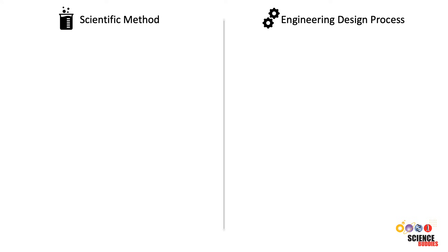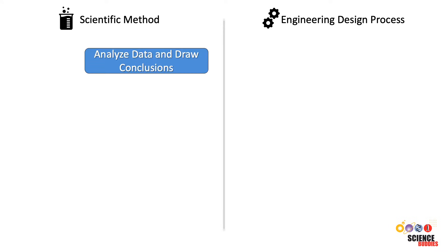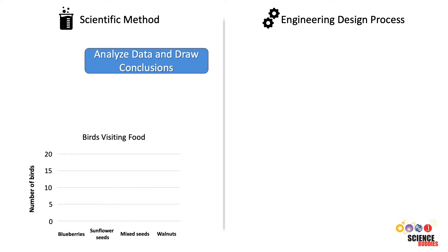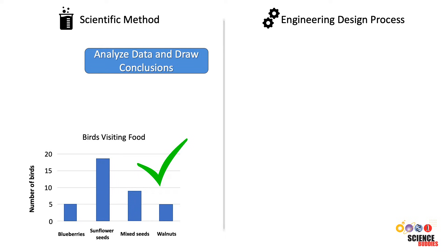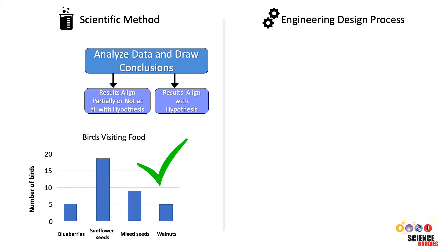In the scientific method, after we finish our procedure and have collected our data, we review and analyze the data. This includes making graphs and evaluating if the collected data is complete, of good enough quality, and valid. If our data is sufficient, we can then draw conclusions about whether or not our data supports our hypothesis. Sometimes the data leads to more questions, and the process starts again with a slightly different question and a new hypothesis.